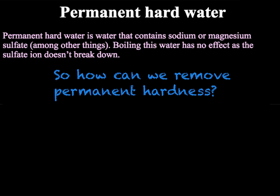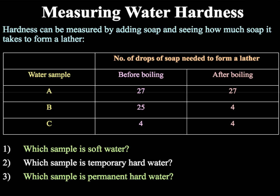So the question is: how can we remove permanent hardness? We need a way to remove the calcium and magnesium ions. Before we look at that, we will have a quick look at how water hardness is measured. In order to measure water hardness, we take different samples and add drops of soap to them. We can then see how quickly we can form a lather. Here we have three water samples A, B and C with ratings before and after boiling.